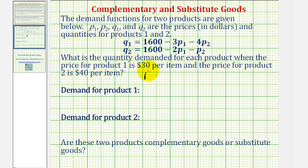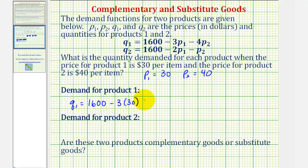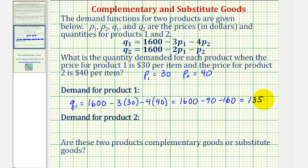We're given that P sub one equals thirty and P sub two equals forty. The demand for product one, Q sub one, equals one thousand six hundred minus three times P sub one minus four times P sub two, or one thousand six hundred minus ninety minus one hundred sixty, which equals one thousand three hundred fifty. So the demand for product one is one thousand three hundred fifty items.